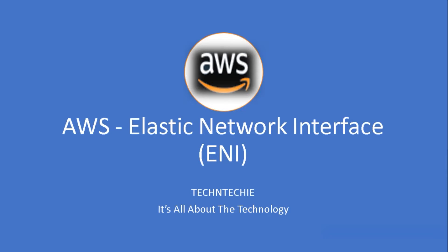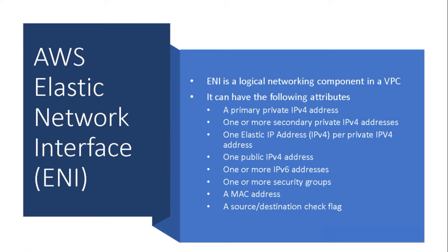Welcome back. What is an Elastic Network Interface, that is ENI? ENI is a logical networking component in a VPC that represents a virtual network card. It can have the following attributes: a primary private IPv4 address, one or more secondary private IPv4 addresses, one Elastic IP address (IPv4) per private IPv4 address, one public IPv4 address, one or more IPv6 addresses.